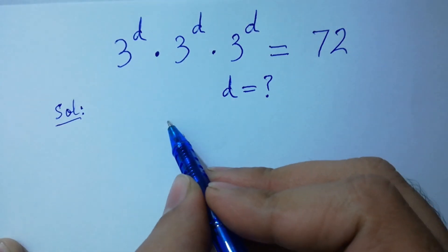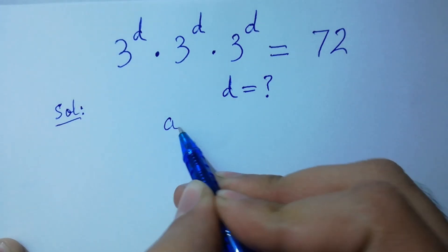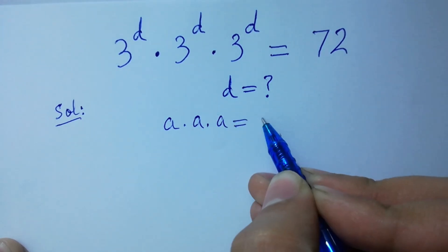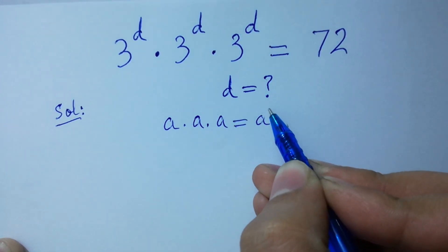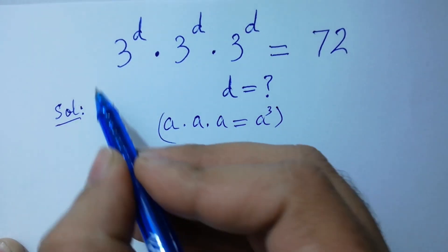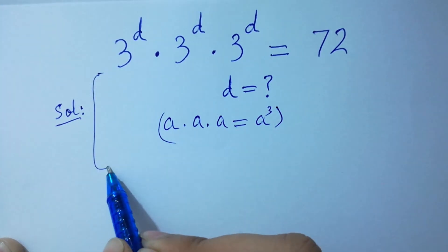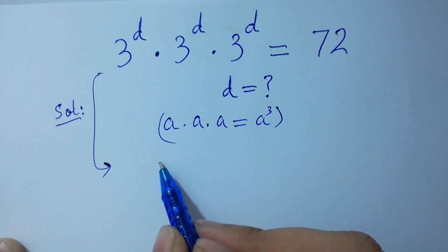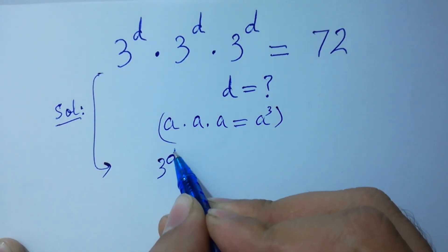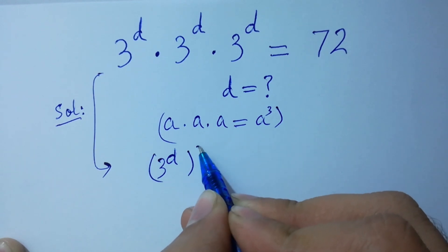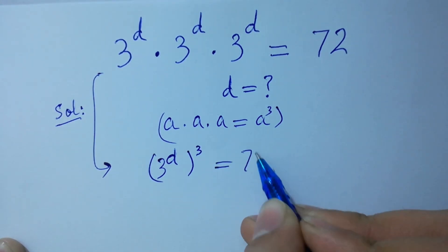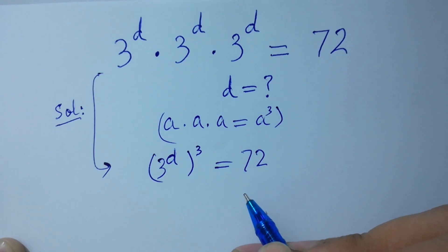Since a times a times a equals a cubed, so we have 3 to the power d, to the whole power cube, equal to 72. I hope you understood.